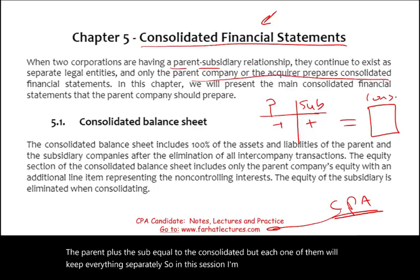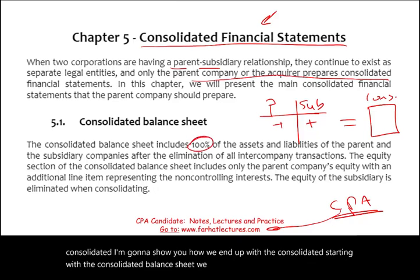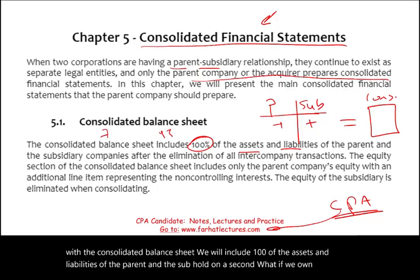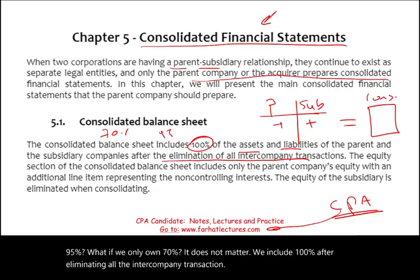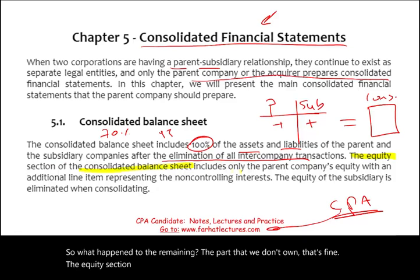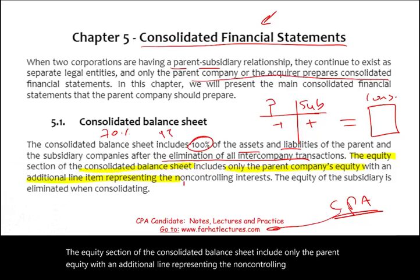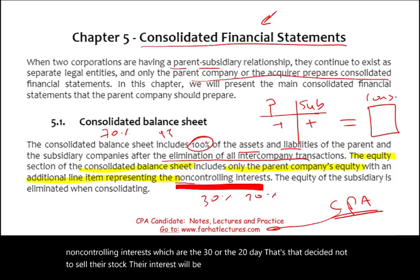In the consolidated balance sheet, we include 100% of the assets and liabilities of both the parent and the sub — even if we only own 95% or 70%, it does not matter. We include 100% after eliminating all intercompany transactions. The equity section of the consolidated balance sheet includes only the parent's equity, with an additional line for non-controlling interest.